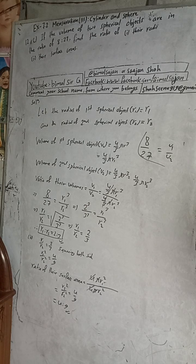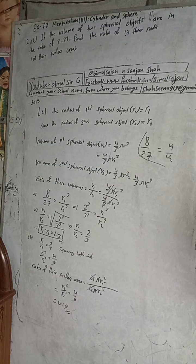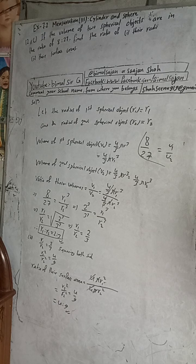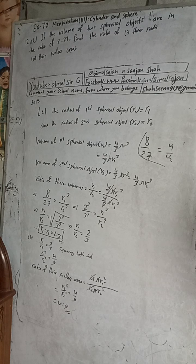The ratio of their radii is 2 is to 3 and the ratio of their surface areas is 4 is to 9 — this is the required answer. If students find this video useful, please like the video and give some comments. If you want to see more videos in the future, like and comment. In case YouTube is banned, follow me on Facebook and TikTok, paste the link and share the video.